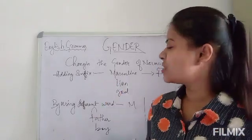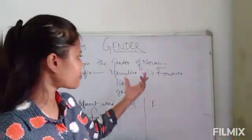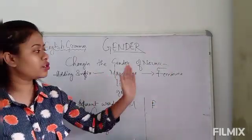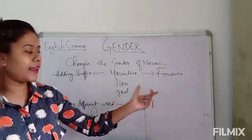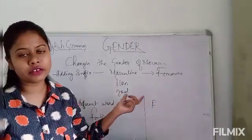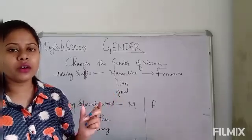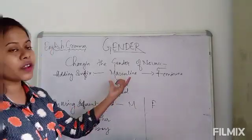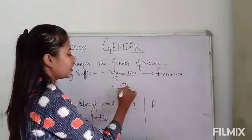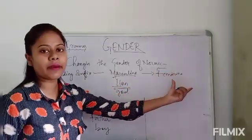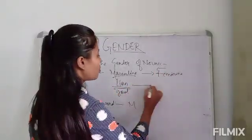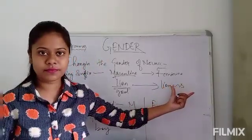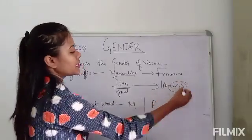Next we will see changing the gender of nouns. We can change the masculine to feminine gender by adding a suffix at the end. A suffix means we add a few letters at the end of the word. For example, in masculine it is 'lion', and in feminine it will change into 'lioness'. Here we used the suffix E-double-S.